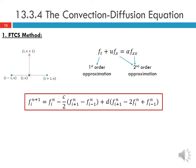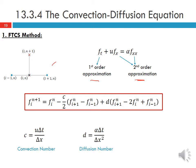Looking at the Forward Time Centered Space method for the convection diffusion equation, we again use a first order approximation in time and second order for the spatial derivatives, giving the expression shown here using the FTCS stencil. Here C is U*delta_T divided by delta_X, which is the convection number, and D is alpha*delta_T over delta_X squared, the diffusion number. Without going into the stability analysis, the stability criteria for this method require that C squared be less than 2D and 2D be less than 1.